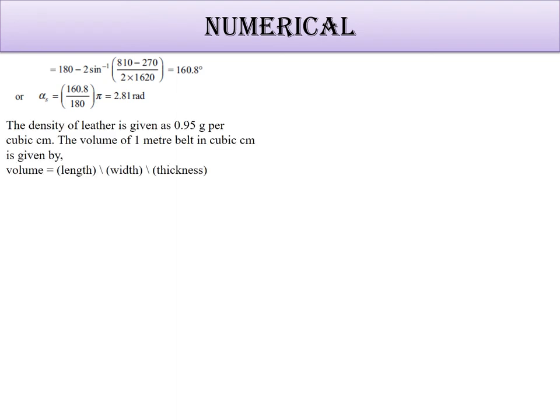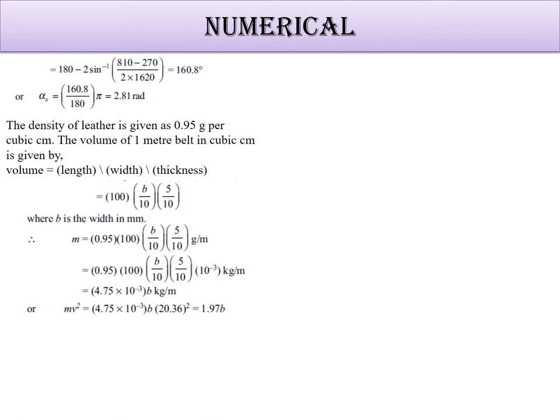The density of leather is given, so we can find the volume. Volume equals length times width times thickness. The volume of 1 meter belt in cubic centimeters is 100 times b by 10 times 5 by 10, where width is in mm.